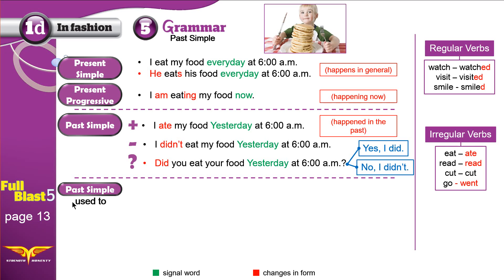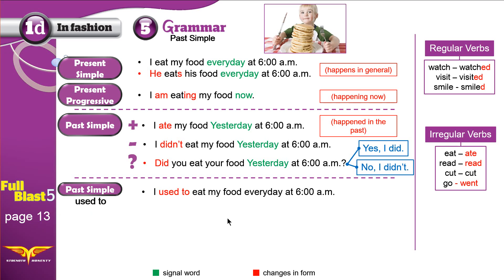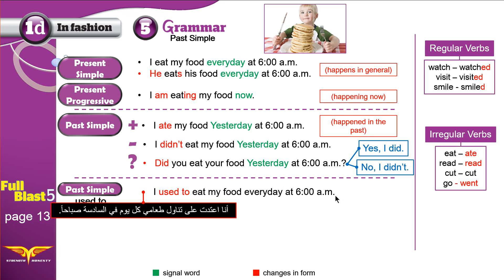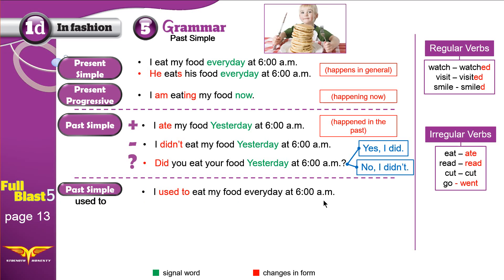Now let's look at 'used to' in the past simple. For example: I used to eat my food every day at 6 a.m. This means it's what I did in the past, but now I've stopped — now I eat at 7. 'Used to' means it's not happening anymore. That's why with 'used to' you can use 'every day' as a signal word.